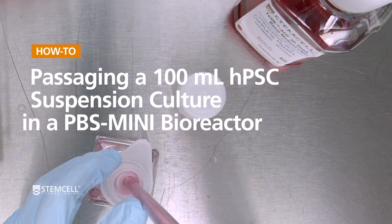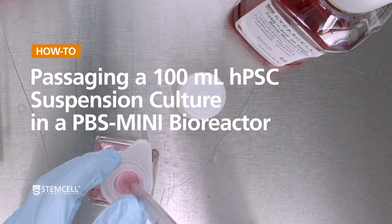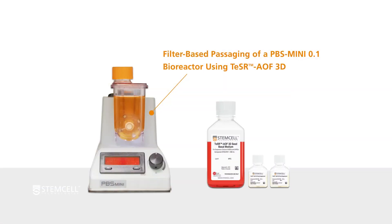In this video, we will outline how to perform a filter-based passage of a PBS-Mini 100 ml bioreactor. Passaging the bioreactor should be completed on either day 3 or day 4 after seeding, or when the PDSC aggregates have reached a size of 300 to 400 microns in diameter.